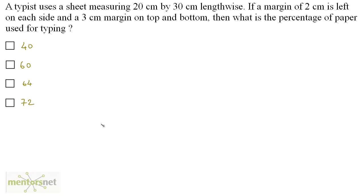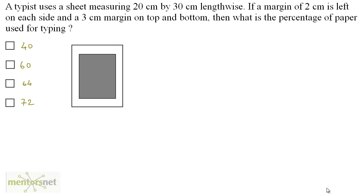A typist uses a sheet measuring 20 cm by 30 cm lengthwise. If a margin of 2 cm is left on each side and a 3 cm margin on top and bottom, then what is the percentage of paper used for typing? You have a paper measuring 20 cm by 30 cm — the breadth is 20 cm and the length is 30 cm.